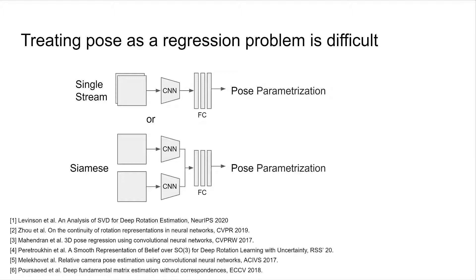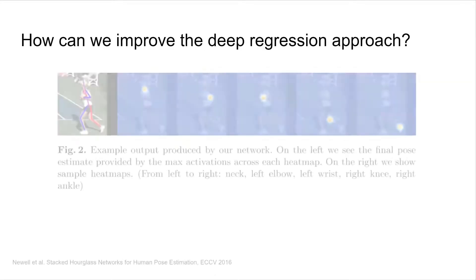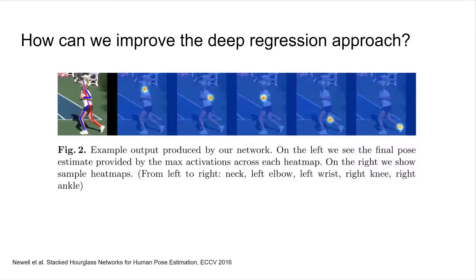However, evidence suggests designing regression models for this task is challenging, and finding an effective parameterization in deep models is still an active research topic. Inspired by techniques that show direct regression methods in other tasks can be improved by estimating discrete distributions, we explore improving camera pose regression by instead predicting a distribution over camera poses. This requires discretizing the high dimensional pose space at a reasonable resolution, which is computationally infeasible in deep networks.